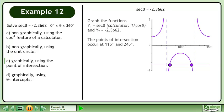The points of intersection occur at 115 degrees and 245 degrees. This is the same result we found in part A.